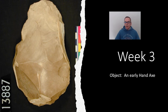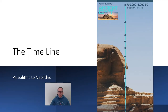The other object we're going to look at this week is an early hand axe. What I will try and remember to do is each time we look at an object, I will create a timeline so you can keep track of where exactly we are in terms of when.